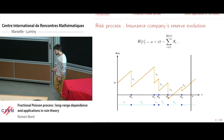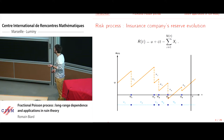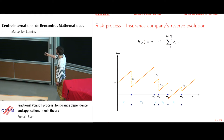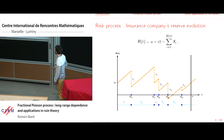Just some basics on ruin theory. We have a risk process which models the time evolution of a reserve of an insurance company. We start with capital U. Premiums are collected with constant rate C. And at random times U1, U2, U3, etc., we have some claims with random amounts X1, X2, X3, X4, etc. We assume it is a big company, so the rate of premium is constant over time.